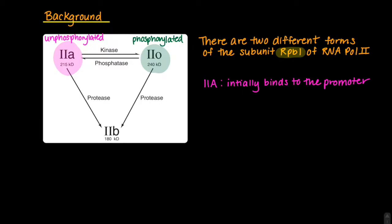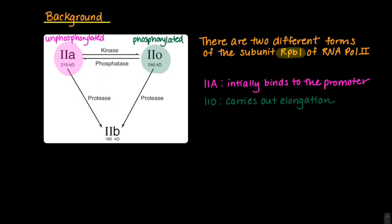The unphosphorylated 2A form of RNA polymerase binds to the promoter and joins the pre-initiation complex. The phosphorylated 2O form of RNA polymerase carries out elongation of the RNA chain. It is believed that this phosphorylation may allow the polymerase to shift from the initiation to elongation phase.